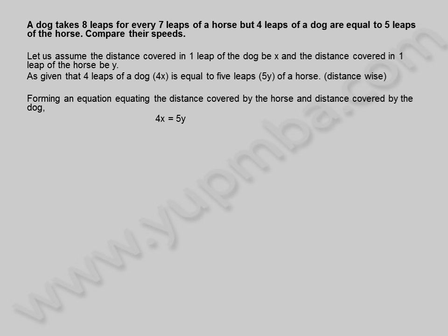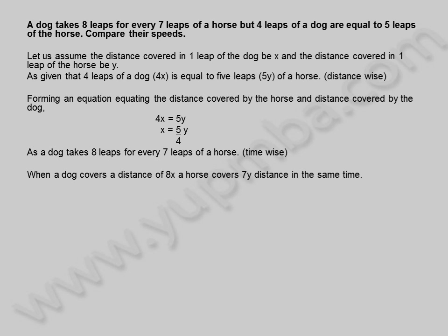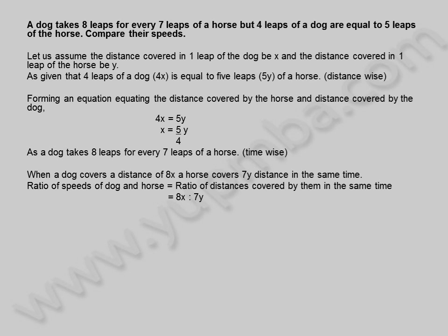4x is equal to 5y, so x is equal to 5y by 4. As a dog takes 8 leaps for every 7 leaps of a horse — time wise. When a dog covers a distance of 8x, a horse covers 7y distance in the same time. The ratio of speeds of dog and horse is equal to the ratio of distances covered by them in the same time, which is 8x to 7y.